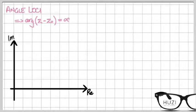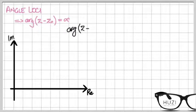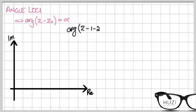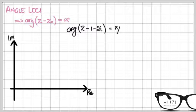Angle loci is pretty simple. Let's say you've been told to sketch the argument of z minus 1 minus 2i equals 5π/6.